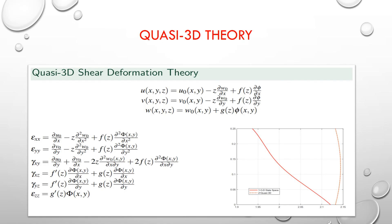Let us see what are the unknowns here. u(x,y,z) = u₀(x,y) − z·(∂w₀/∂x) + f(z)·(∂φ/∂x). Similarly, v(x,y,z) = v₀(x,y) − z·(∂w₀/∂y) + f(z)·(∂φ/∂y). And w(x,y,z) = w₀(x,y) + g(z)·φ(x,y,z). From the last theories, this is different.